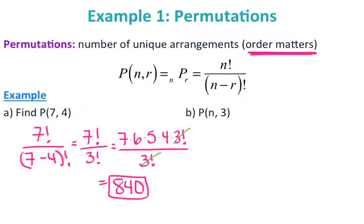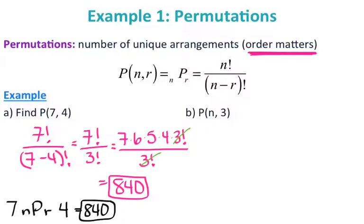You can also do this in the calculator, just like you can do combinations. Hit math, move over to PRB, but instead of NCR you're now going to use NPR. Change your N to 7 and R to 4, and you still get 840. So anytime you're working with combinations or permutations with regular numbers, you can just plug it right into the calculator.